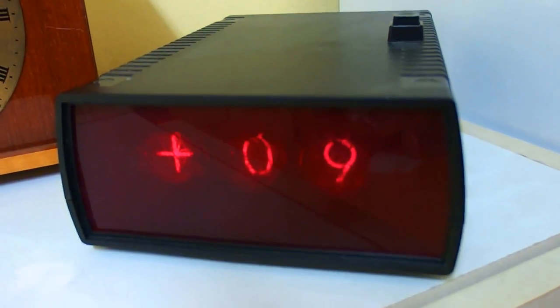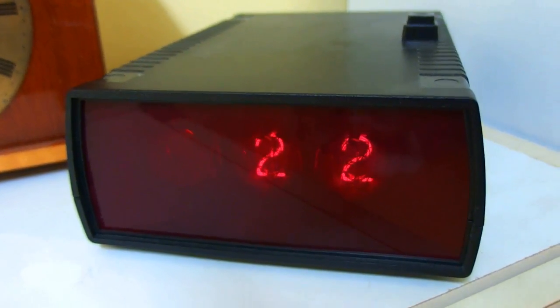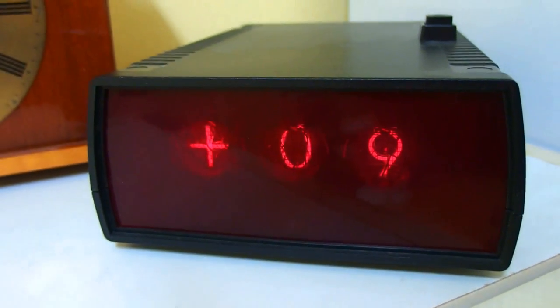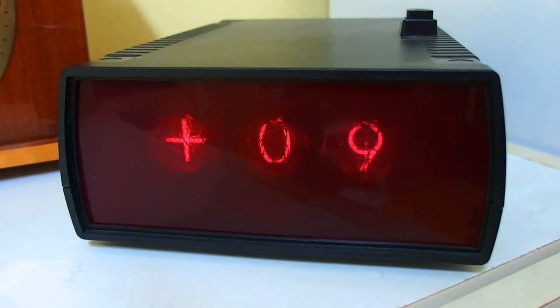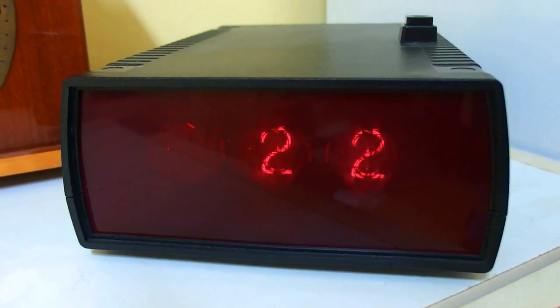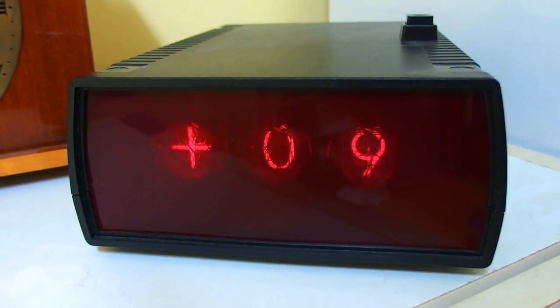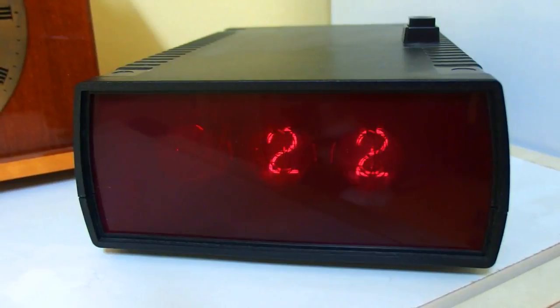And this one is not a clock. It's a Nixie thermometer. It measures indoor and outdoor temperature. It cycles through both temperatures. This is outside and this one is inside.